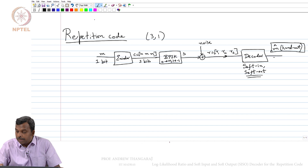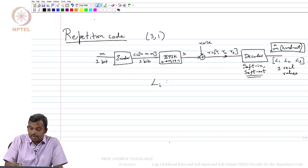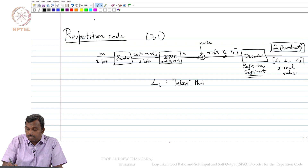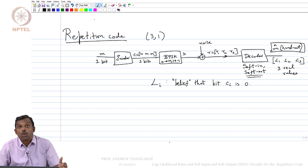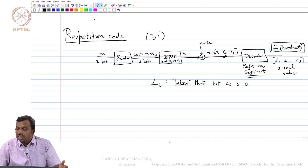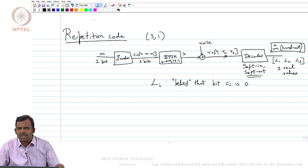The soft output will be L1, L2, L3 — three real values that come out of this decoder. L1 is the belief that bit C1 is 0. I want to say for each of the bits: what is my belief that the first bit is 0, the second bit is 0, the third bit is 0. For the repetition code it will turn out that all three values are the same, which makes sense, though there are some subtleties, as we will see.